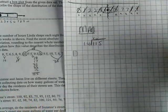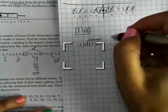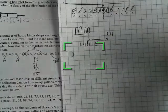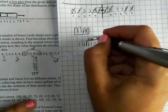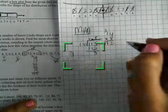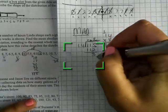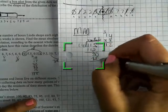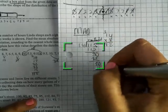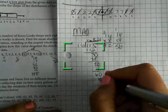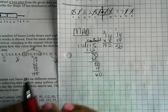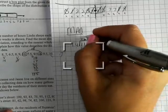14 goes into 115: 14 times 8 is 112, leaving a remainder of 3. Continuing the division gives approximately 8.21. So the mean is approximately 8.21.